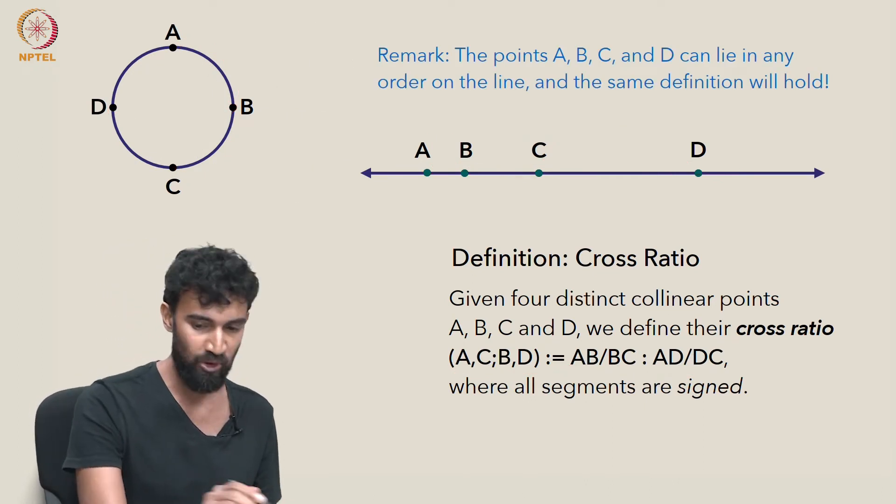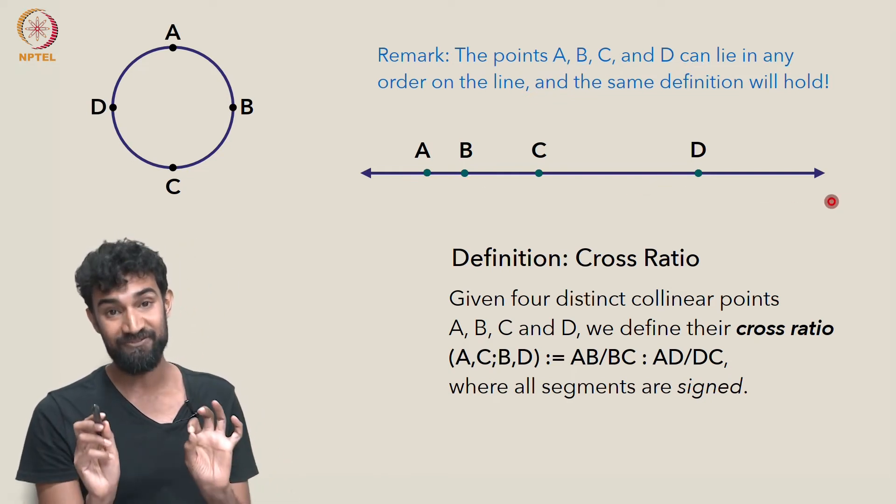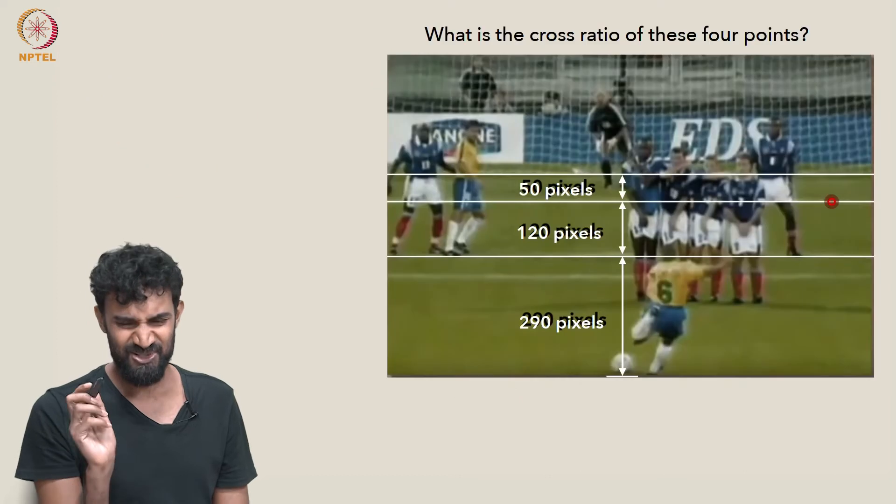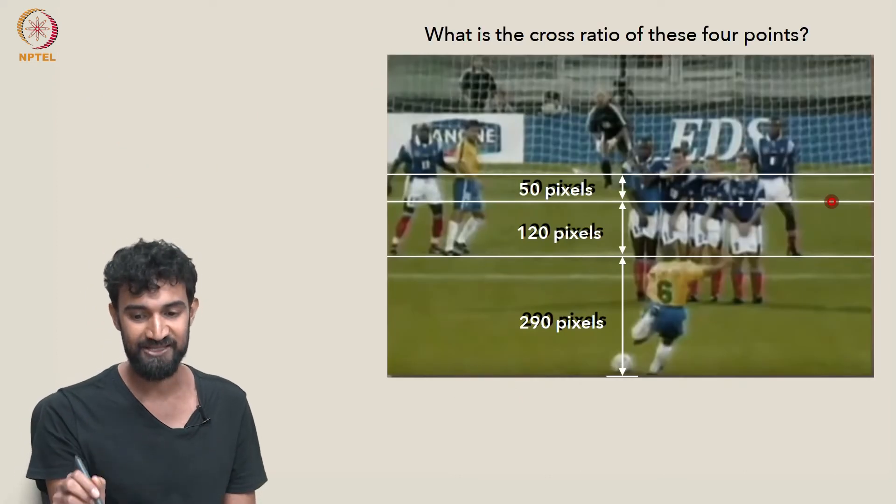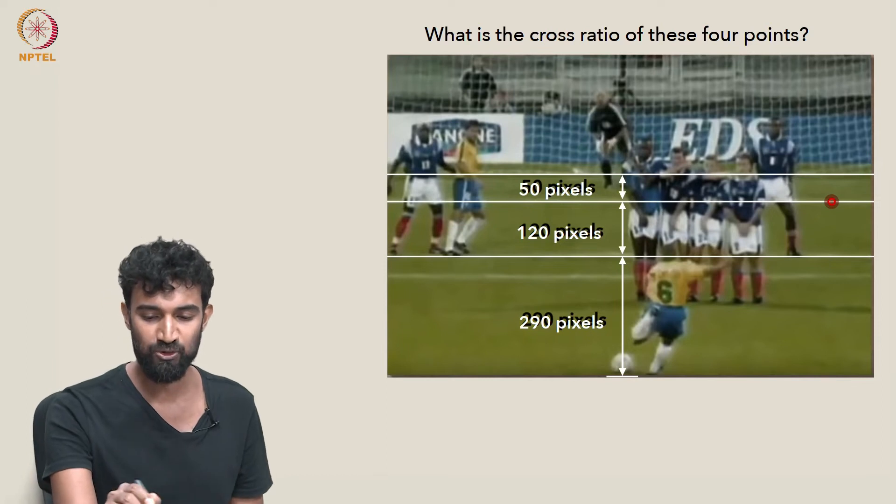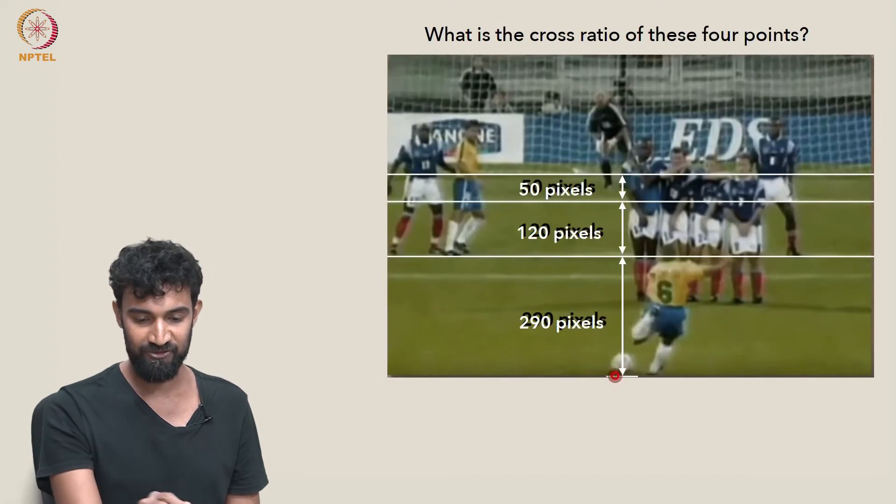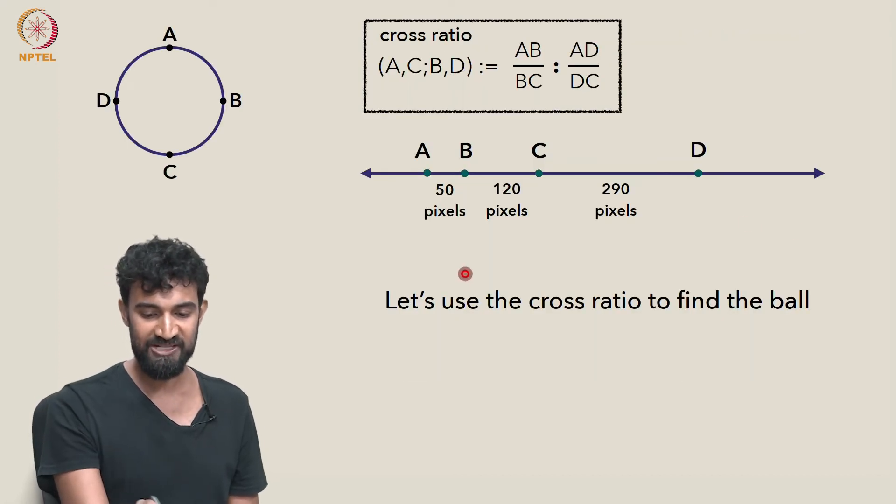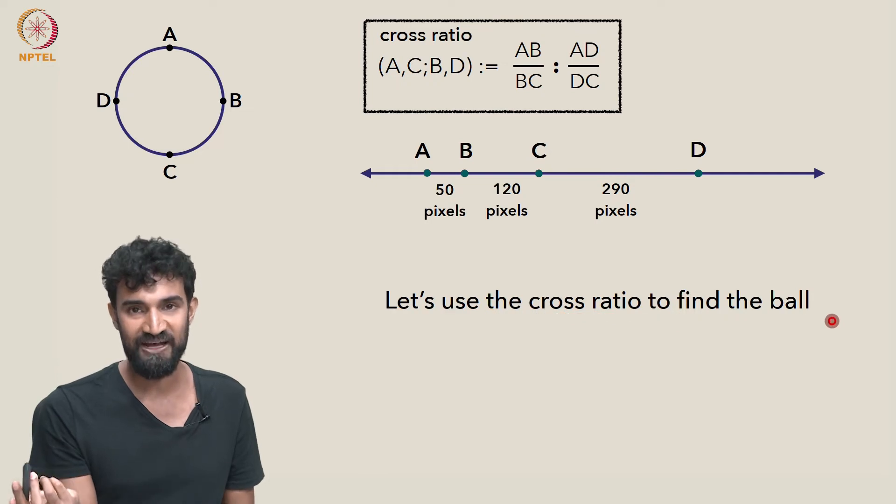So, and I want to mention that these points, A, B, C, and D, can lie in any order on this line. And the same definition will hold. So let's just use it. It's a bit confusing in the abstract. But when we actually start applying it, it'll make more sense. So what's the cross ratio of these four points? I'm just taking them out from the photograph, laying them out here. 50 pixels, AB is 50 pixels, BC is 120 pixels, and CD is 290 pixels. So let's use the cross ratio to find where the ball is.